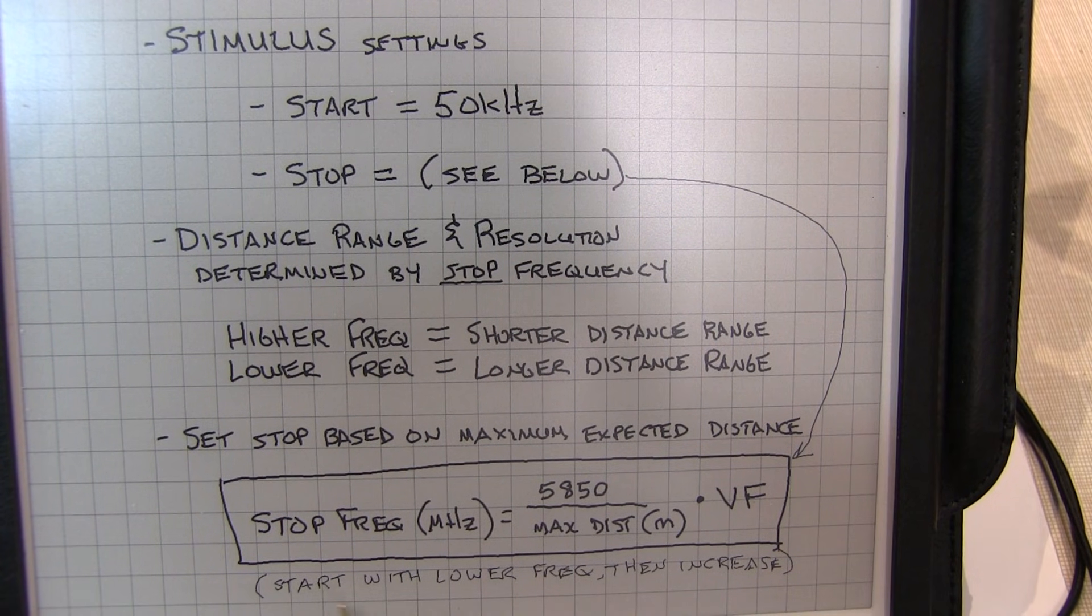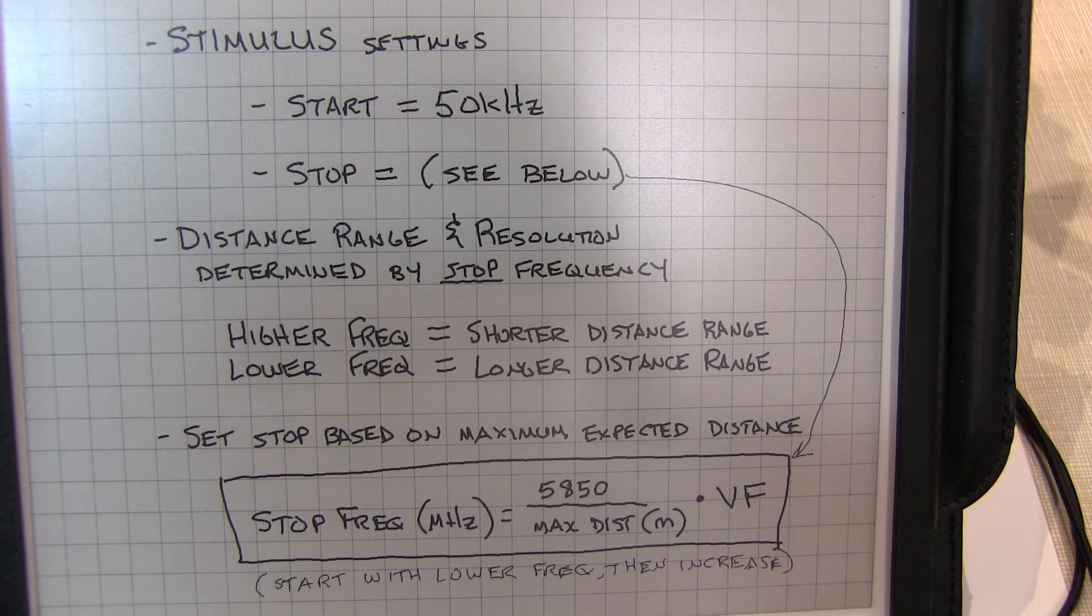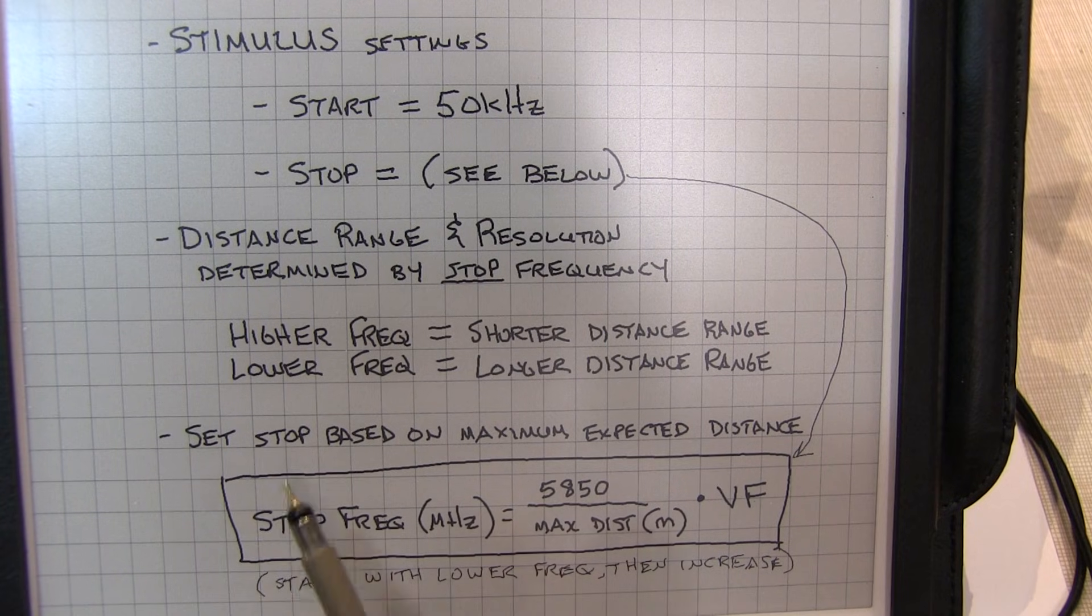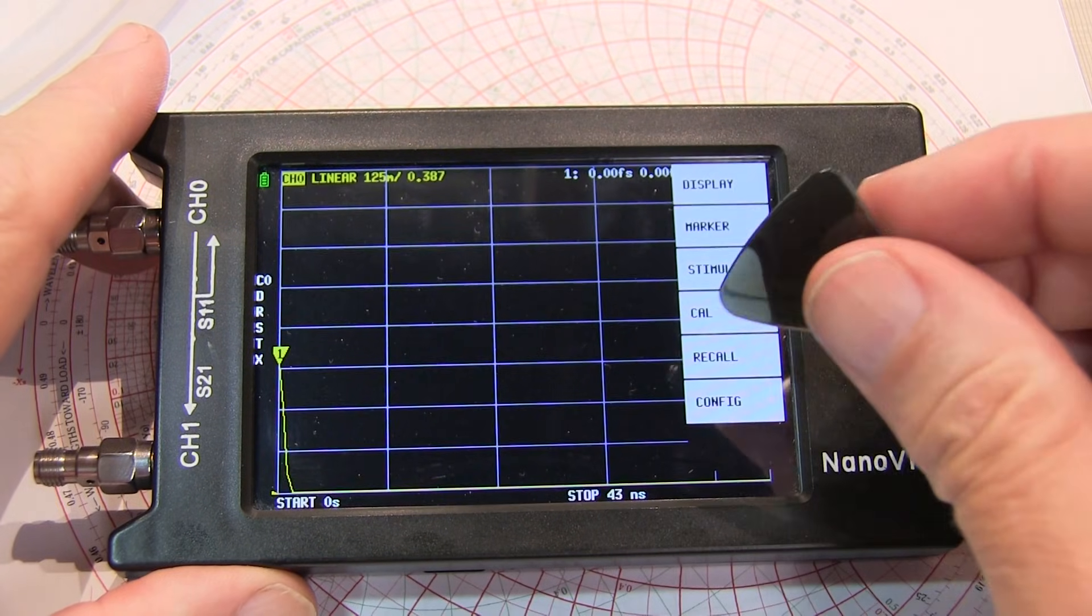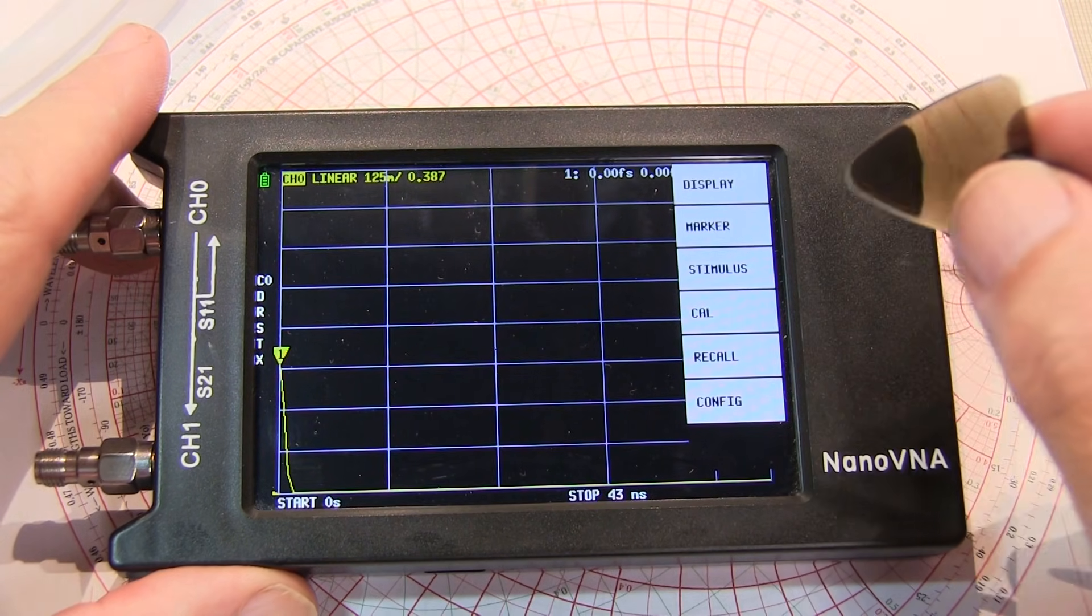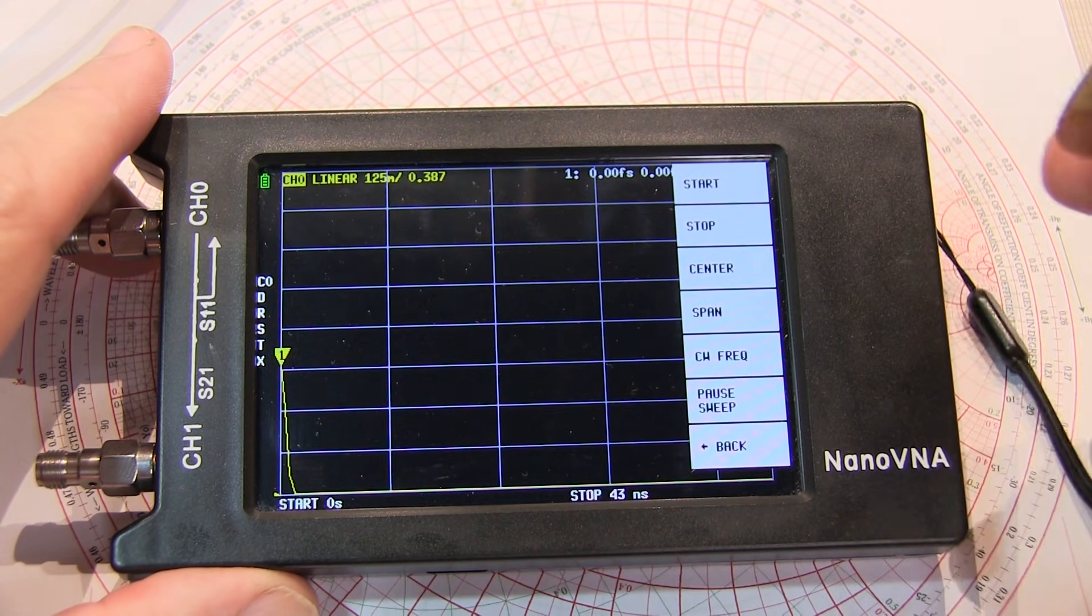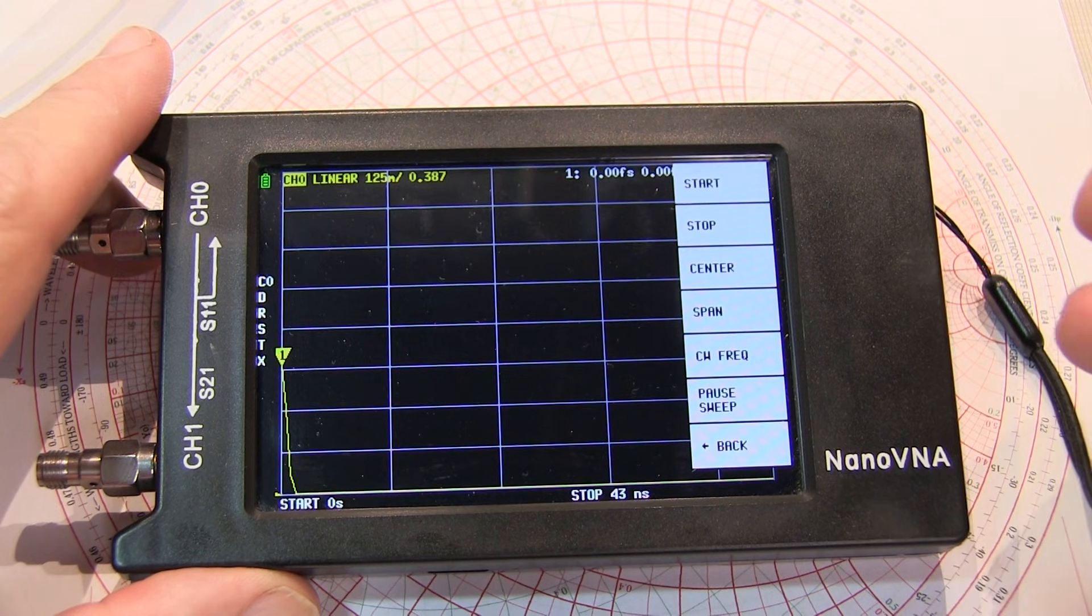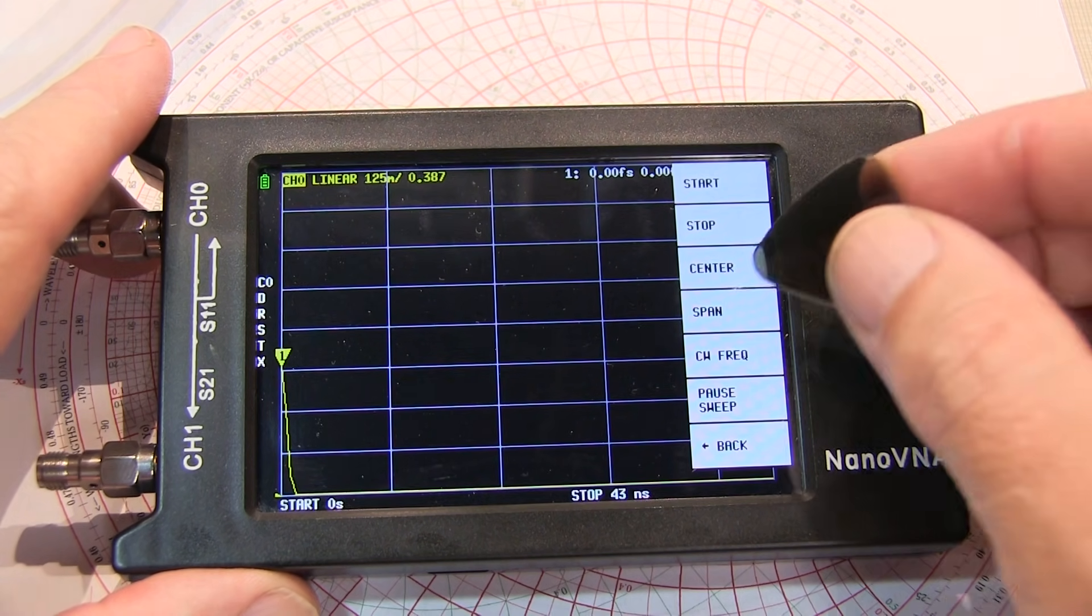In this case, the velocity factor is the decimal value. So if your velocity factor was 80%, you would put 0.8 here, and that will determine the stop frequency. It might be handy to start with even a lower frequency to give you a little more measurement range. Then if your measurement is close to the start, you can start increasing the frequency to get better resolution.